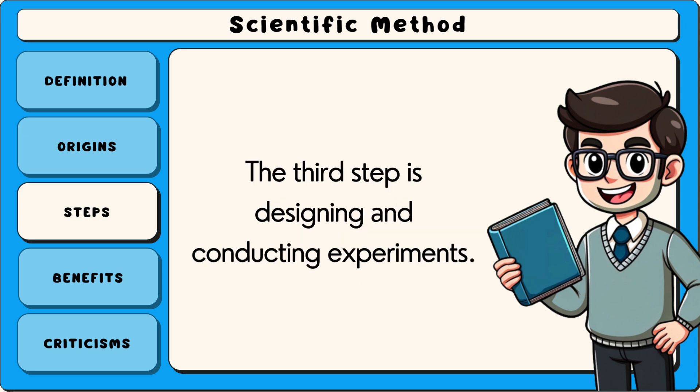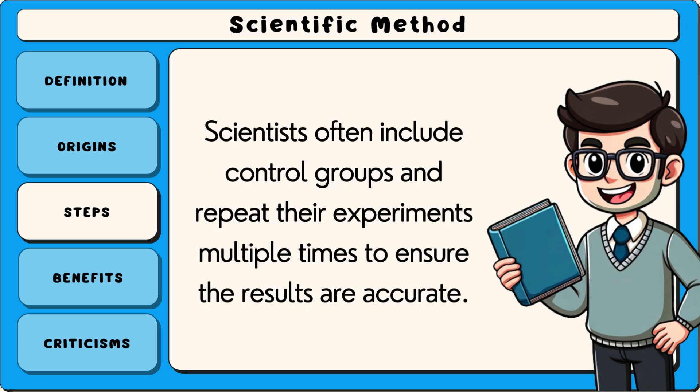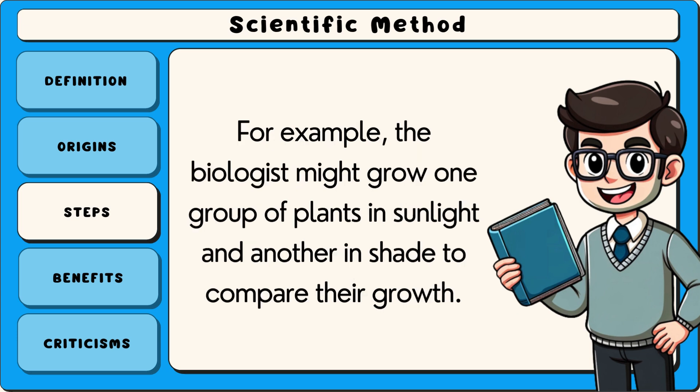The third step is designing and conducting experiments. Experiments are carefully controlled tests that collect data to evaluate the hypothesis. Scientists often include control groups and repeat their experiments multiple times to ensure the results are accurate. For example, the biologist might grow one group of plants in sunlight and another in shade to compare their growth.